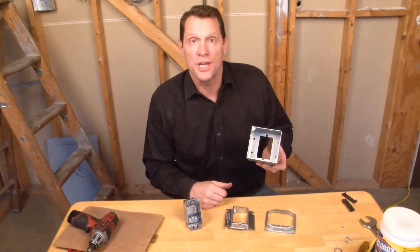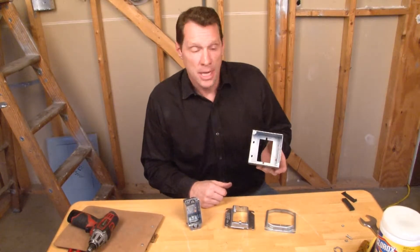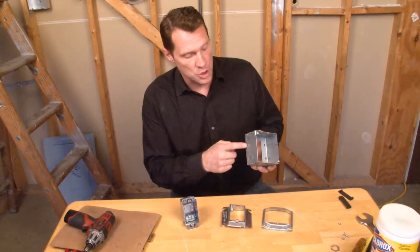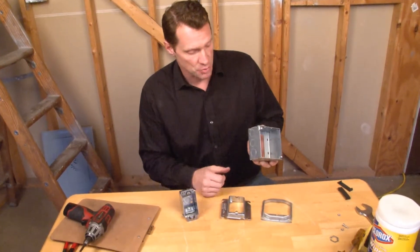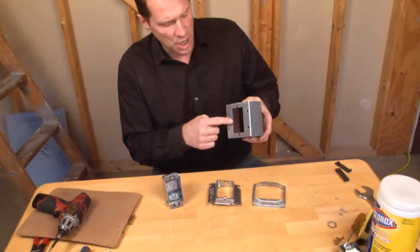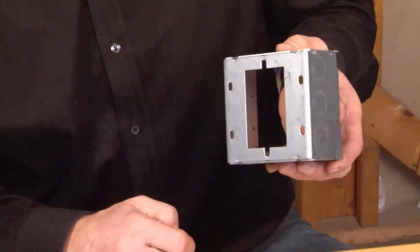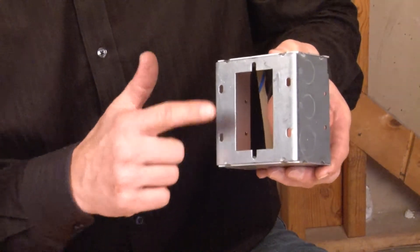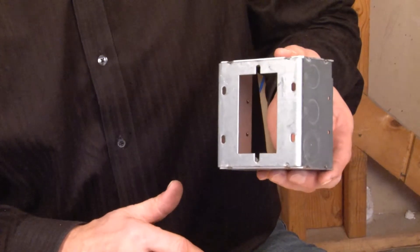Part number 53171SUB is a 4-inch square, 2 1/8-inch deep extension ring that has a cutout in the bottom of the box, allowing it to be fastened to a variety of different plaster rings.